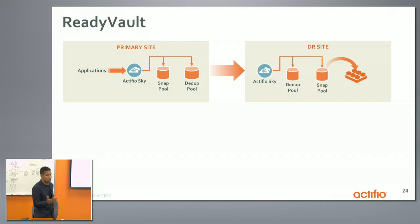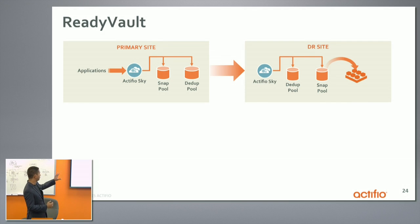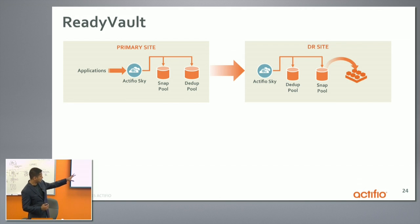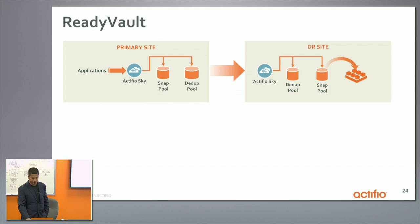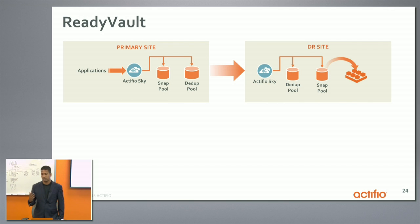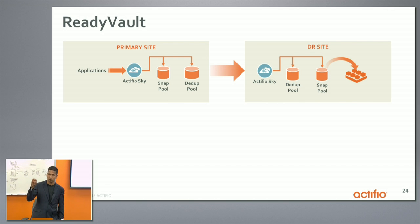This is typically how ActiveView works in a typical primary side, DR side environment. You have ActiveView, it takes the data, replicates it, and you're doing DR at the second side. Now that DR side could be AWS as well. Now let's understand how somebody can completely eliminate tapes. A second problem is somebody might be pouring millions of dollars into those massive deduplication appliances because of the fact that they had seven-year retention.